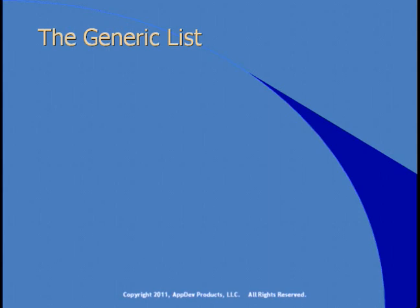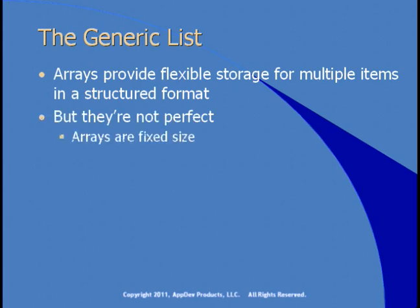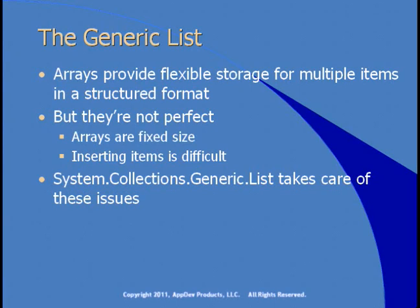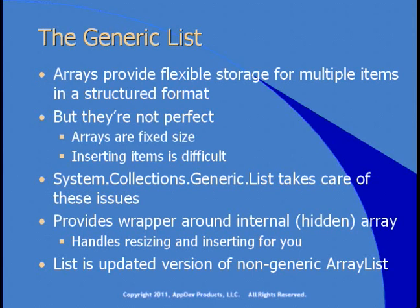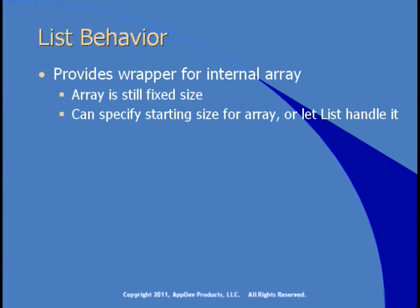Let's start by looking at the generic List class. Arrays provide flexible storage for multiple items, but they're not perfect — they're fixed size and inserting new items is difficult. The System.Collections.Generic.List class takes care of these issues. It implements IList and provides a wrapper around an internal, generally hidden array, handling resizing and inserting items for you. This is the updated version of the non-generic ArrayList class.